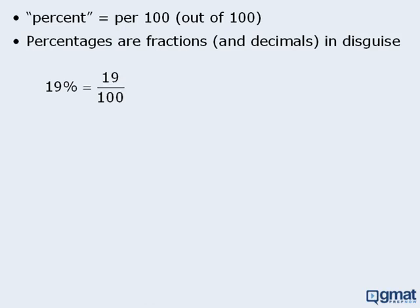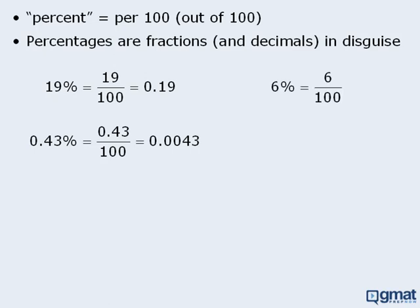For example, 19% literally means 19 one-hundredths, which is equal to 0.19. Similarly, 0.43% is the same as 0.43 over 100, and this is equal to 0.0043. 6% is equal to 6 one-hundredths, which is 0.06. And 300% is equal to 300 over 100, which equals 3.